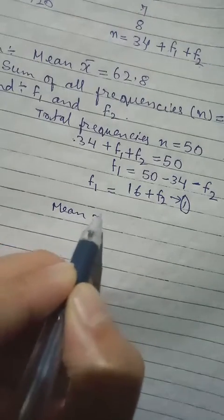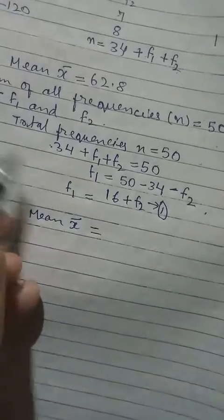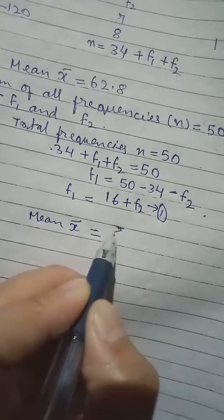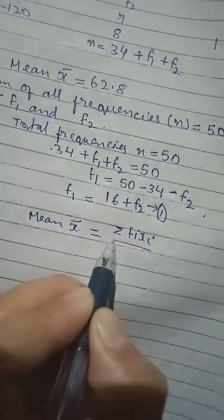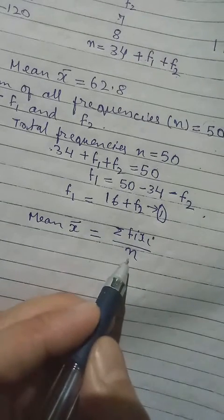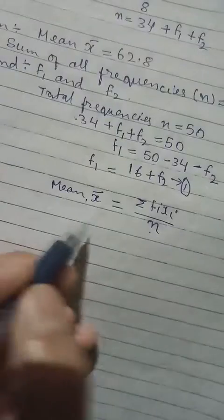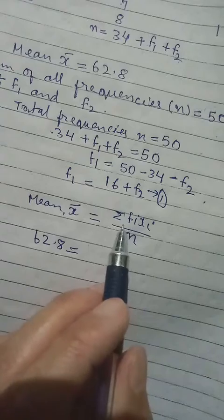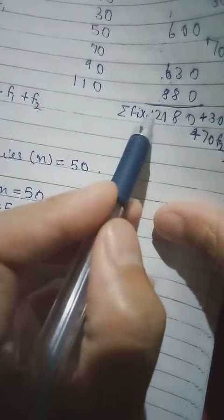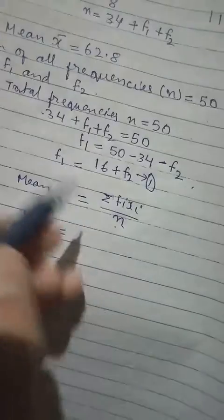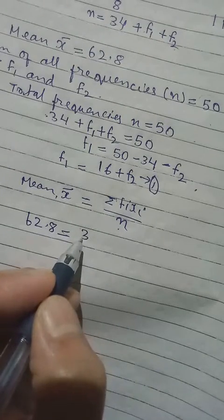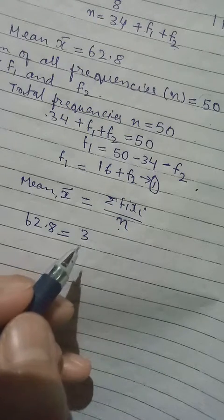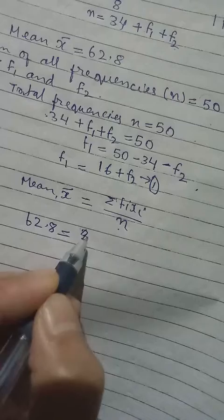The mean formula using the direct method is: x̄ = Σfixi / n. The mean is 62.8. The summation fixi = 2180 + 30f1 + 70f2. The total frequency n = 50.